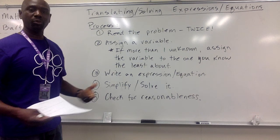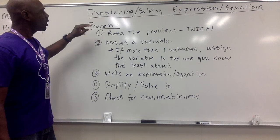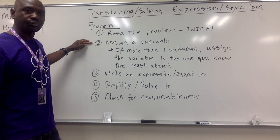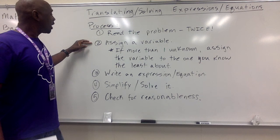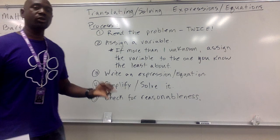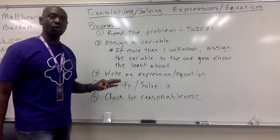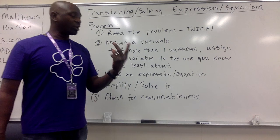Let's translate — go from words into actual expressions and equations. I'll do this over a couple of videos so they don't get too long. The process: first, read the problem twice. Read it the first time to get all the way through, then read it a second time to start noticing things. Next, assign a variable to the unknown. If there's more than one unknown, assign the variable to the one you know the least about.